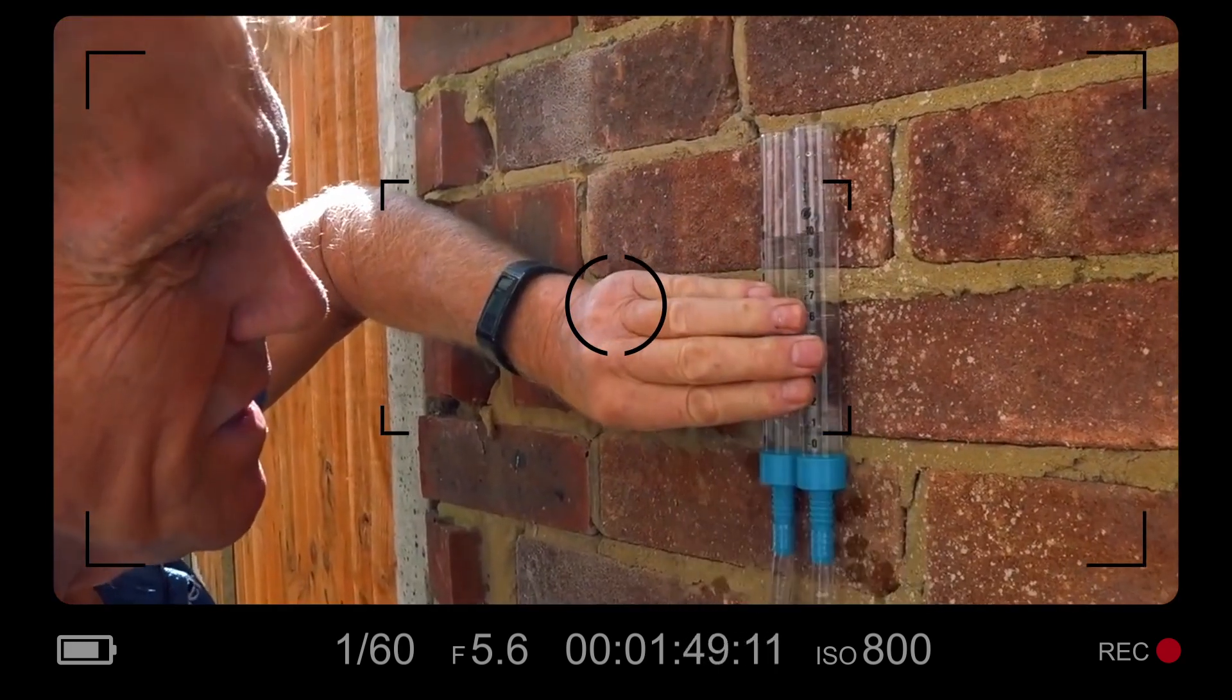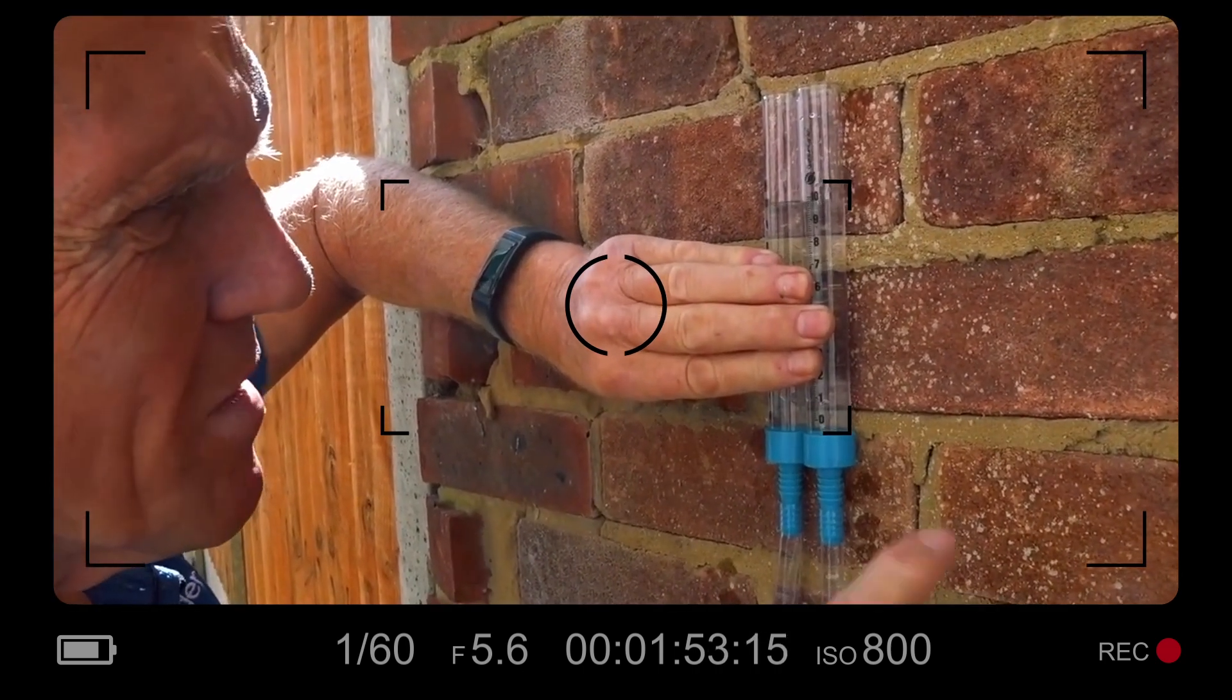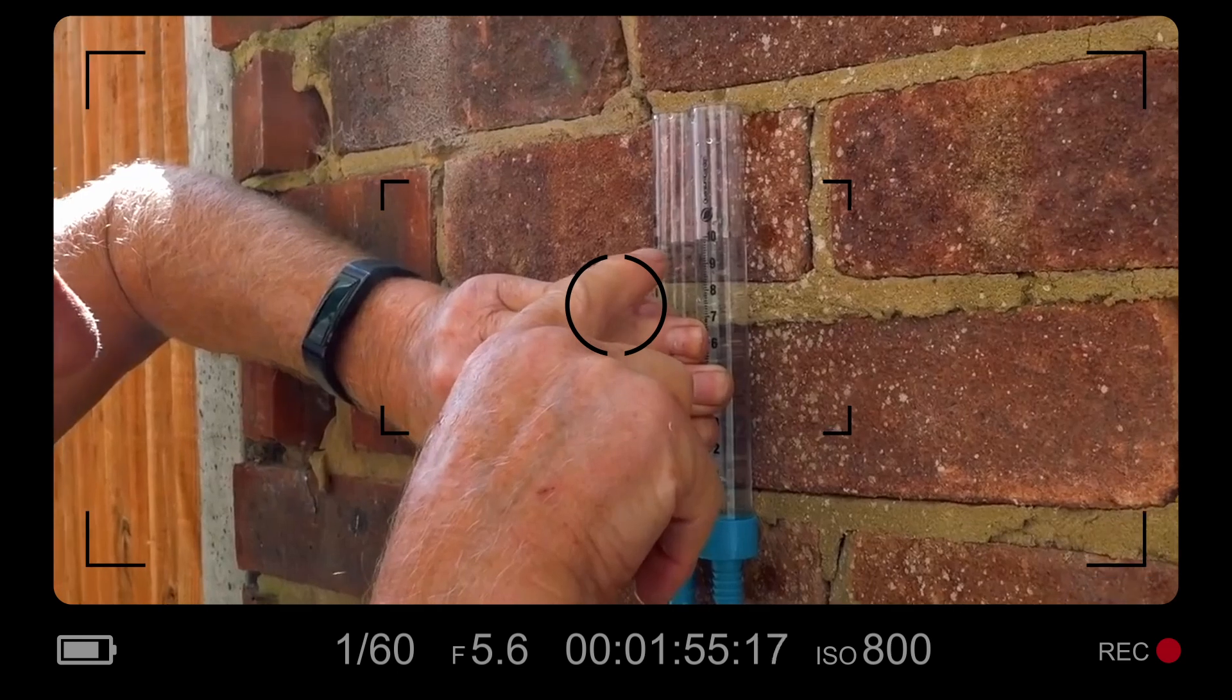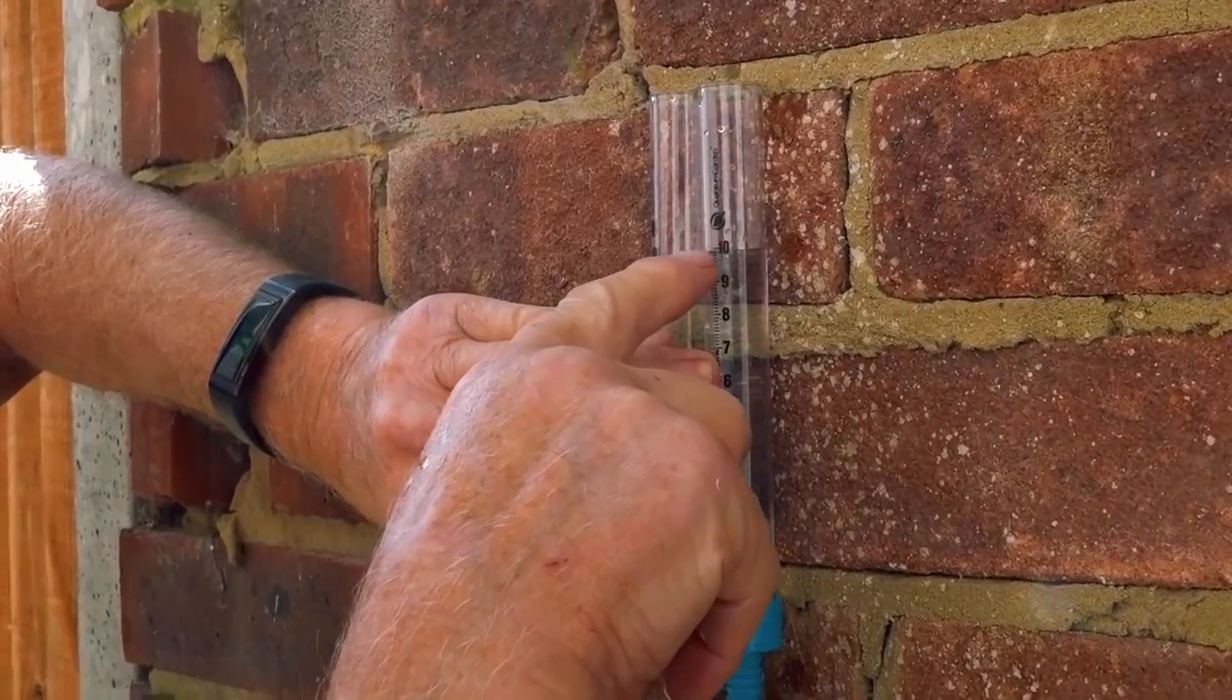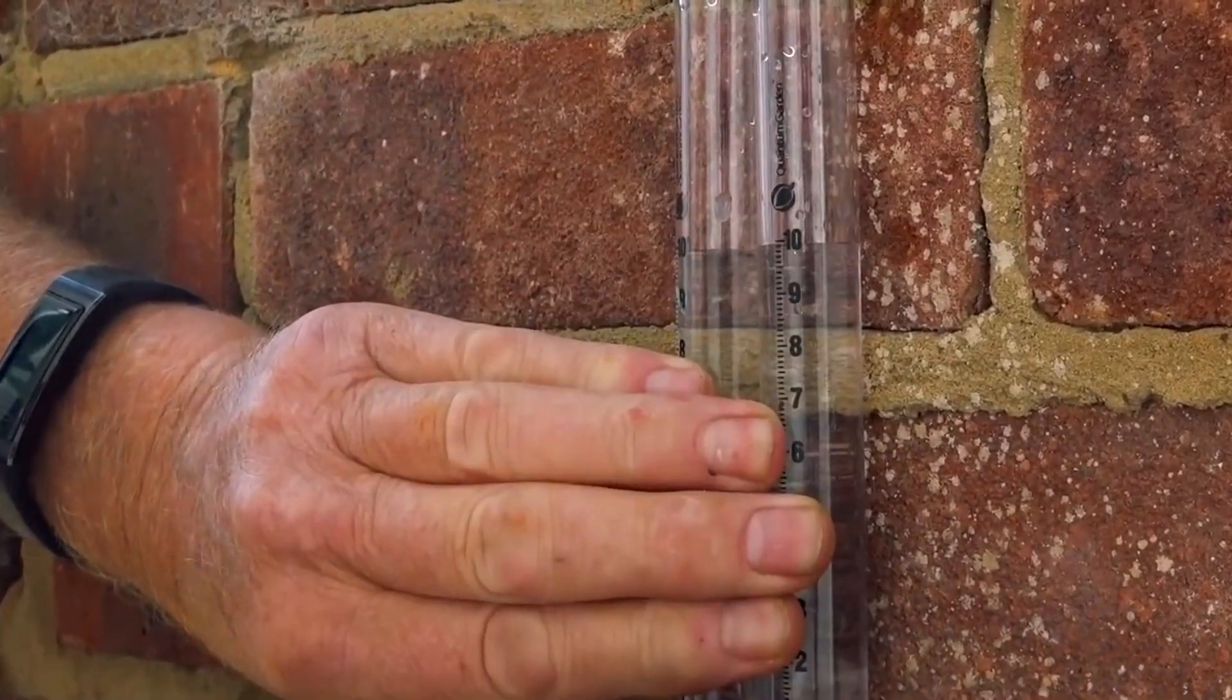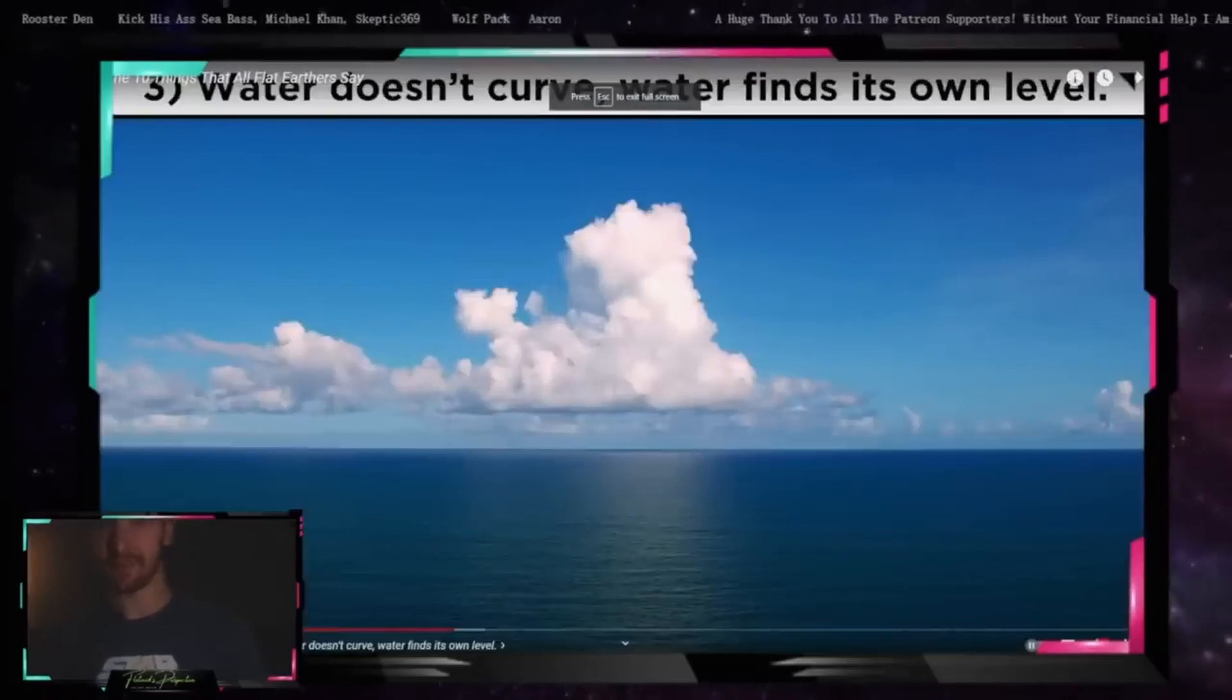But also you can measure round corners. See that once you get the air out of it, just give the hoses a little bit of a shake. Make sure there's no trapped air in there. And you can see that the water finds its own level. This guy is failing miserably.